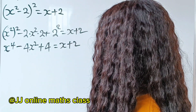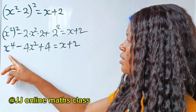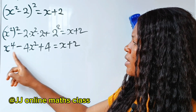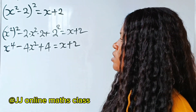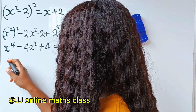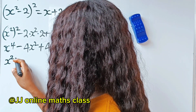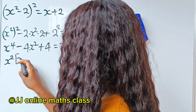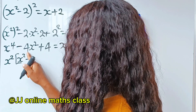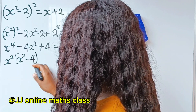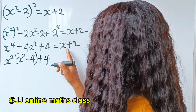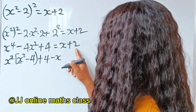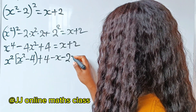2 squared is the same thing as 4. Now when you look at this, notice that we can factorize x squared out from this term and this term. So let's go ahead and do that. We have x to the power of 2. When this is divided by this, we have x squared remaining. When this is divided by this, we have 4 remaining. Plus 4, now this will come to become minus x, and this will turn to become minus 2.